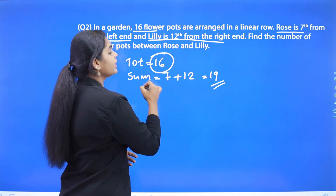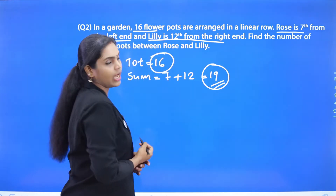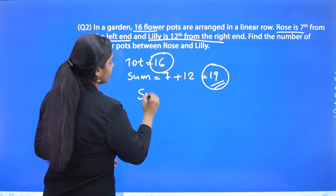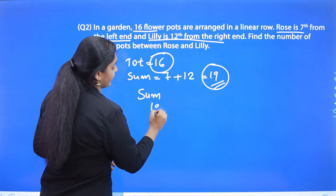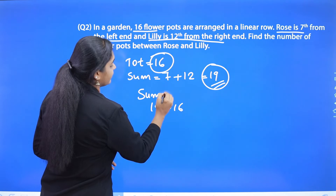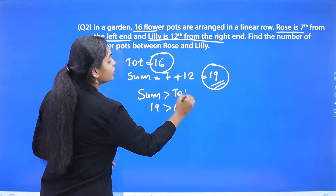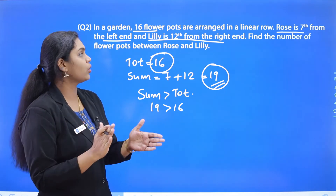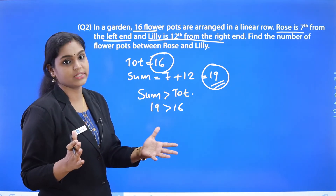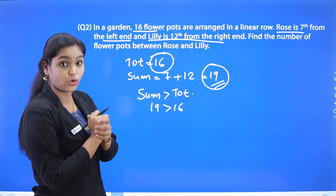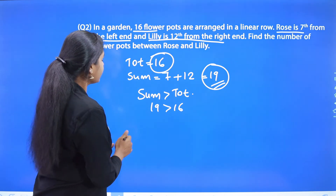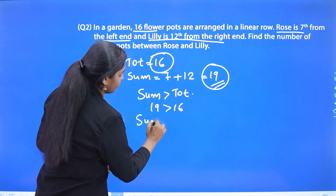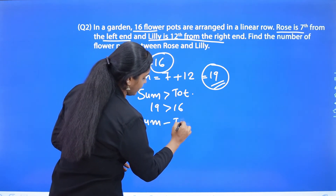The sum of 7 plus 12 is 19. Now we compare these two values: the total number (16) and the sum (19). It is clear that the sum 19 is greater than the total 16. So we need to find the number of flower pots between the two given pots.